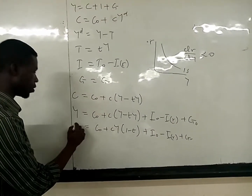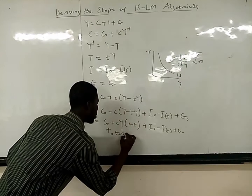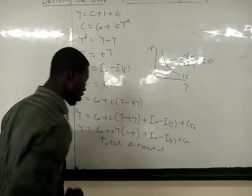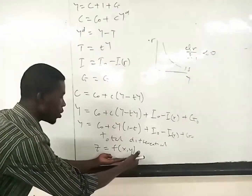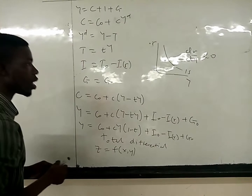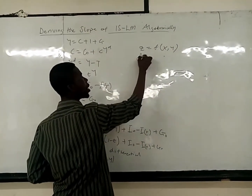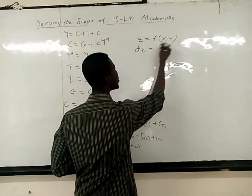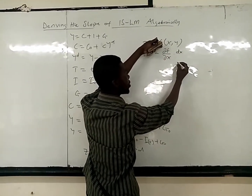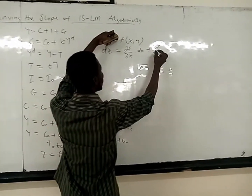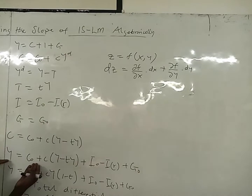So what we are going to use to get the algebraic slope is the total differential, or total derivative. Given a function such as z = f(x, y), the total differential is: differentiate f with respect to the first variable x, times dx, plus the differential of f with respect to the second variable y, times dy. This is what we are going to apply to our IS function.